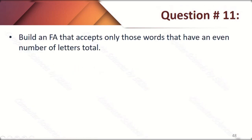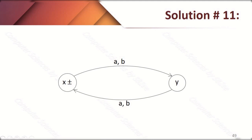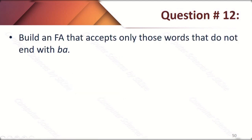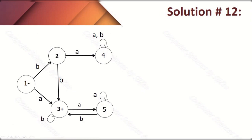Question twelve: build an FA that accepts only those words that do not end with 'BA'. For the ending 'BA', that word is sent to the dead state, and all other words are accepted. State 4 acts as the dead state, so the machine rejects words ending in 'BA' and accepts all others. Question thirteen: build an FA that accepts only those words that begin or end in a double letter. We already made an FA for starting and ending in the same letter in a previous example lecture, so here we just add two more transitions for 'A' and 'B'. Double 'AA' means starting and ending with the same double letter, and similarly for 'BB'. After making the FA deterministic, X and Y act as dead states.